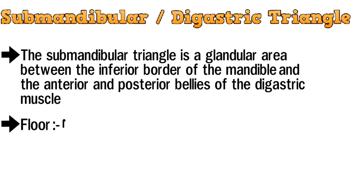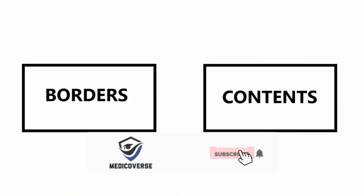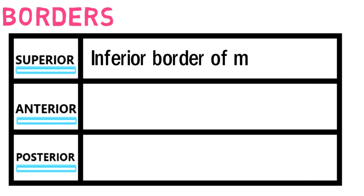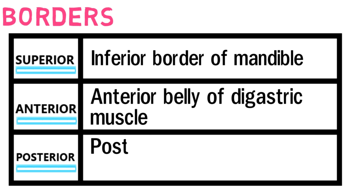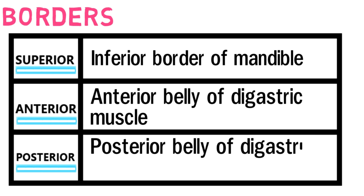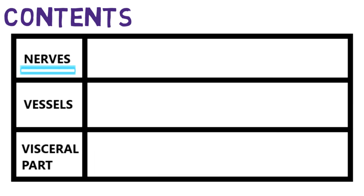The floor of this triangle is formed by the mylohyoid muscle. For a better understanding, we will discuss the borders and the contents in a tabular form. The borders of the submandibular triangle are the superior, anterior, and posterior borders. The superior border is at the inferior border of the mandible. The anterior border is the anterior belly of the digastric muscle, and the posterior border is the posterior belly of the digastric muscle. The contents of this triangle include the nerves, vessels, and the viscera.